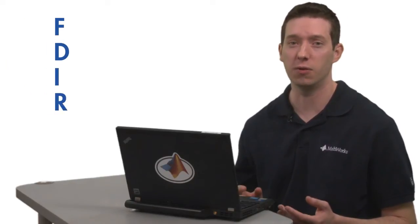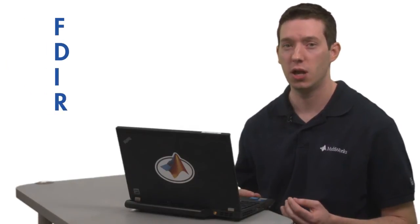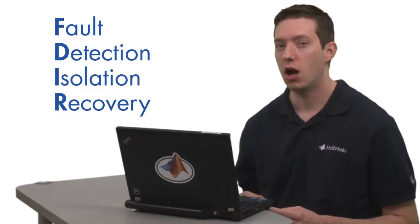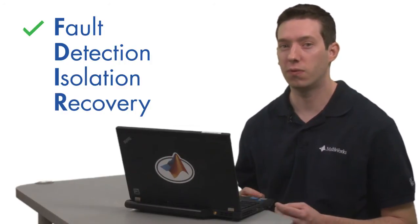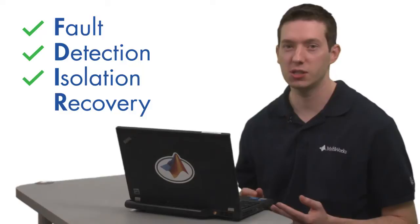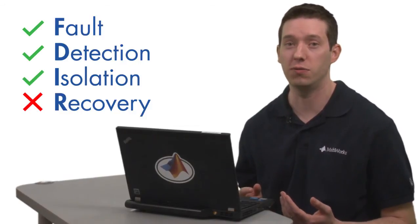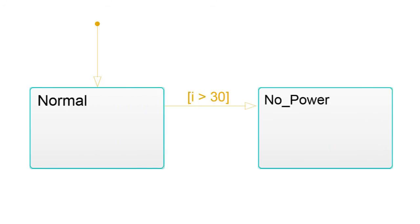Now in certain engineering circles, you'll hear the term FDIR instead of fault management. This stands for fault detection, isolation, and recovery. A fuse could perform fault detection and isolation, but it doesn't really handle recovery since you have to go out and buy a new fuse when it breaks. A circuit breaker, however, fulfills all tasks of FDIR by providing a means of returning to normal operation.